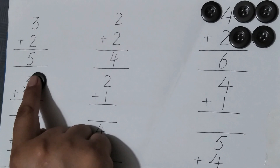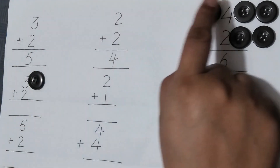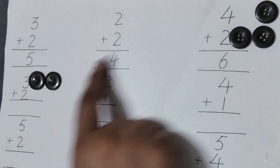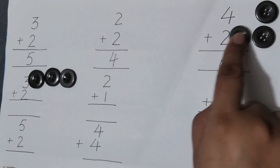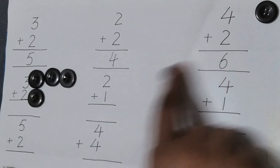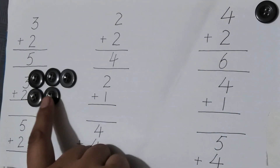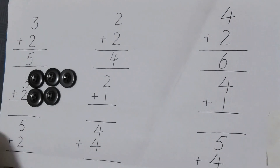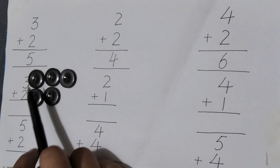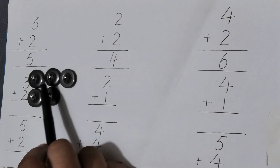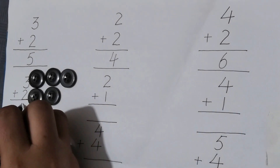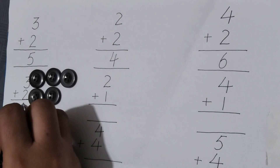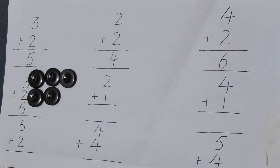One, two, three, four, five, six. Total buttons are six. Now here is three plus two. I will take three buttons — one, two, three — plus two — one, two. Now count how many there are in total: one, two, three, four, five. The answer is five.